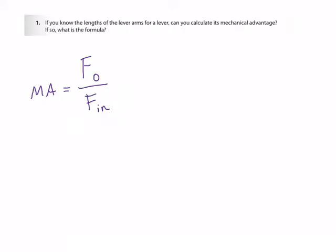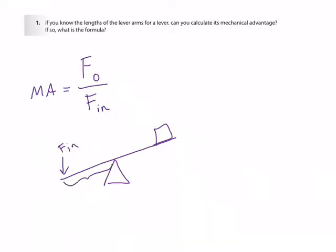We talked about the first formula for mechanical advantage as being the ratio of output force divided by input force. But when you have a lever, you can actually do a lot more with calculating mechanical advantage depending on the lengths of the input arm and the output arm. The input arm is where you apply your input force, from that point to the fulcrum. The arm that extends from the fulcrum to your output force is your output arm.